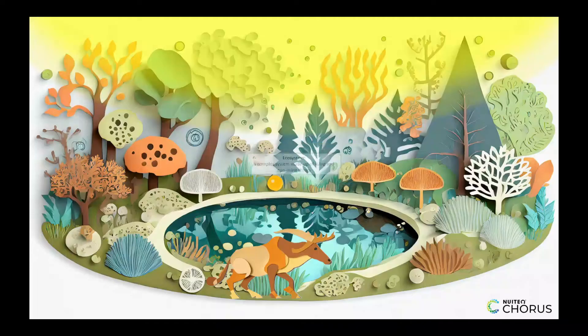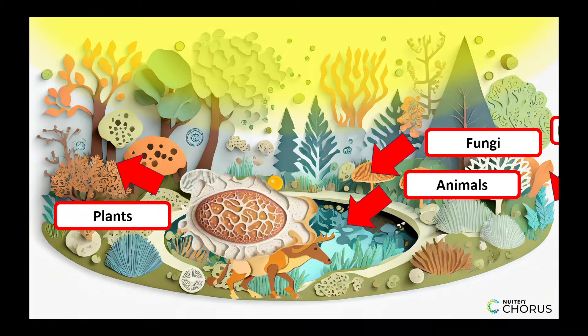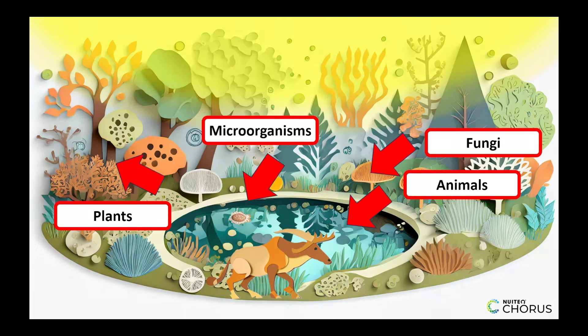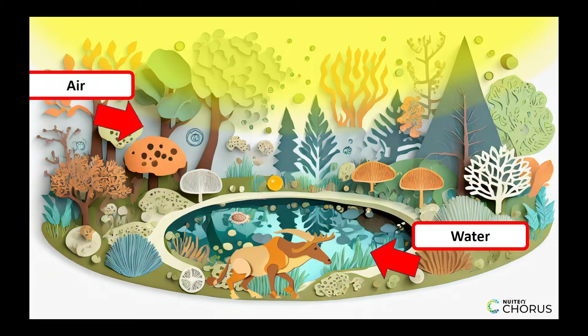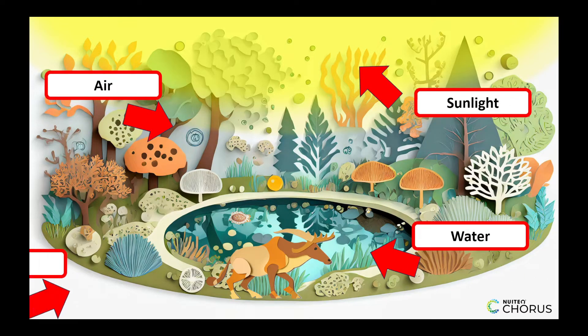The living parts of the ecosystem are plants, animals, fungi, and microorganisms, while the non-living parts are water, air, sunlight, and soil.